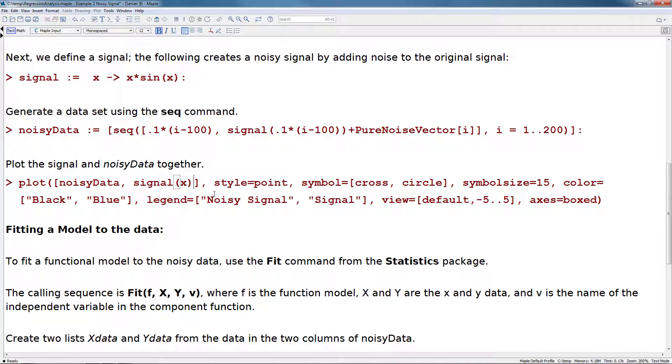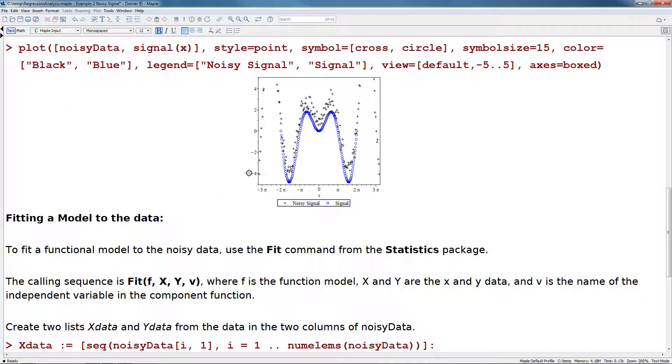Let's plot this signal and the noisy data together using the plot command. From this plot, we can see that the blue circles represent the signal and the black crosses represent the noisy signal. So here's where we've added noise to our signal.